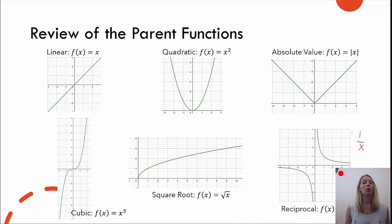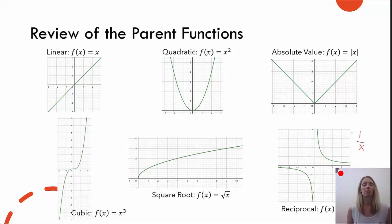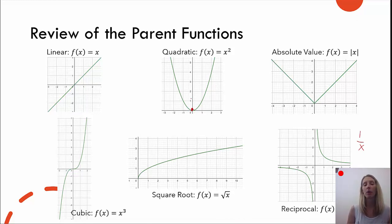What we want to do when describing transformations — and I like to keep in mind some key points on each function — because that really helps determine whether there's some sort of stretch or shrink. For our linear function, we have key points: zero-zero, one-one, and negative one-negative one. The quadratic function has the vertex at zero-zero as a minimum point, and also one-one and negative one-one. For the absolute value, we also have that bottom vertex at zero-zero, and this graph also has one-one and negative one-one.